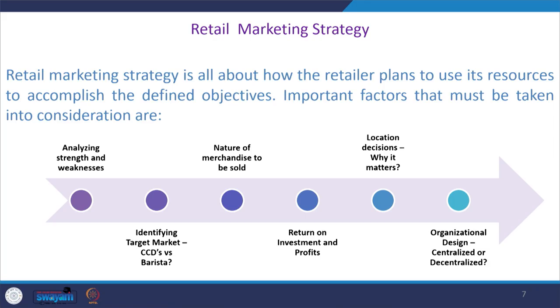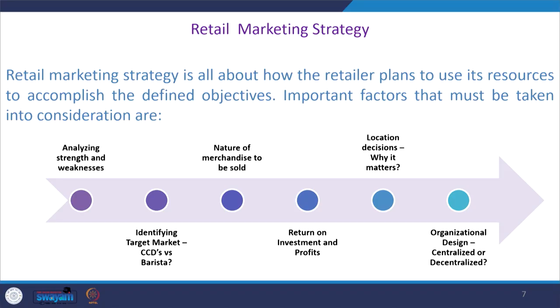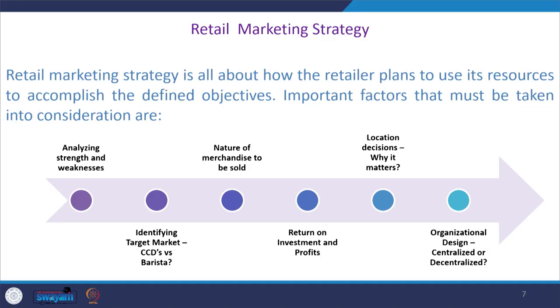The next part to discuss is retail marketing strategy — how the retailer plans to use its resources to accomplish defined objectives. We technically look at what is the target market a retailer wants to aim at, which segment of customers they would like to cater to, and how they want to create a sustainable competitive advantage. A retailer is going to analyze their strengths and weaknesses, and once realized, this gives an indication of the customer base they will be interacting with or catering to.